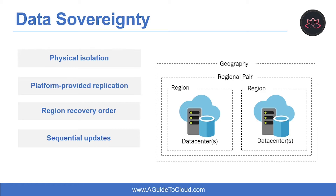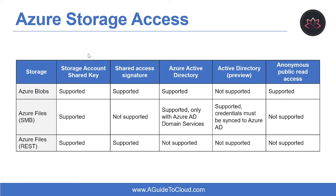Sequential updates help minimize downtime, the effect of bugs, and logical failures in the rare event of a bad update. The last benefit is data residency — to meet data residency requirements for tax and law enforcement, a region resides within the same geography as its pair.